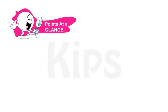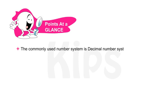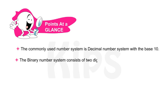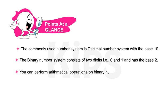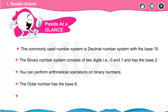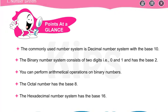Let us quickly glance through the key points discussed in this chapter. The commonly used number system is the decimal number system with the base 10. The binary number system consists of two digits — 0 and 1 — and has the base 2. You can perform mathematical operations on binary numbers. The octal number system has the base 8, and the hexadecimal number system has the base 16.